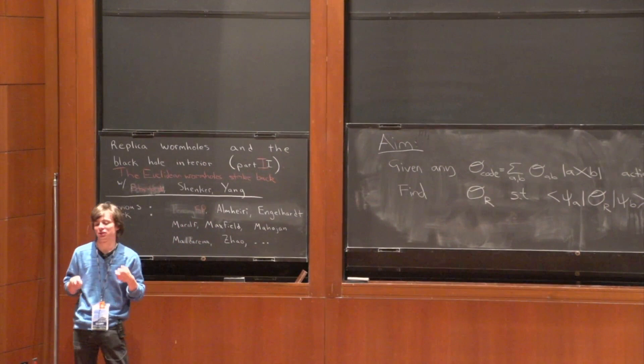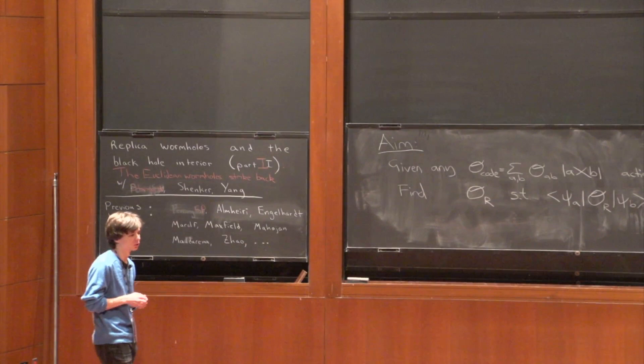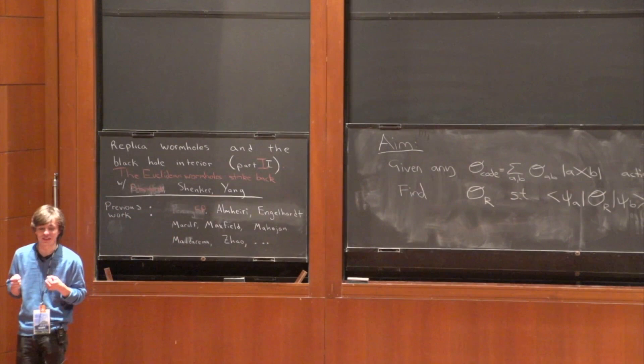In our case, it goes up and then it flattens out when you have more entanglement between the interior and the Hawking radiation for an evaporating black hole; it would of course go back down.